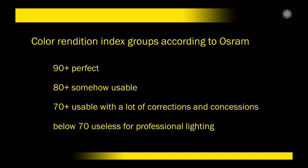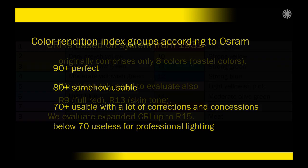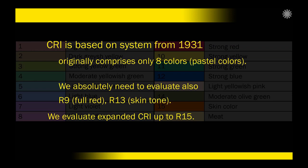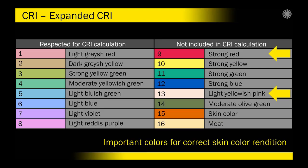First, there is CRI — Color Rendition Index. This is an older standard which is often quoted, but it is based on a system from 1931 which works with only eight colors, and those are pastel colors. They don't give us enough information for a true and valid evaluation. Traditional CRI misses important information on colors called R9, which is red, and on R13 the skin color, and several others which also have importance.